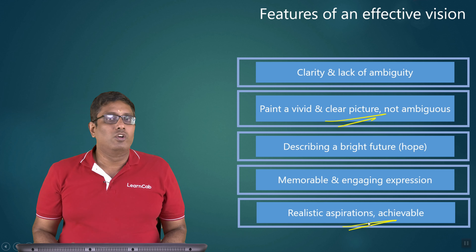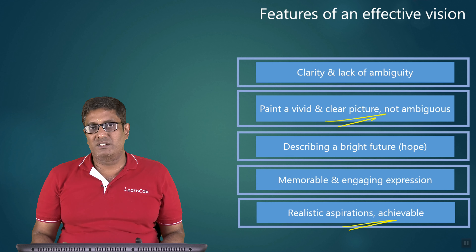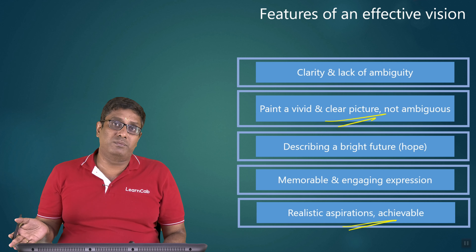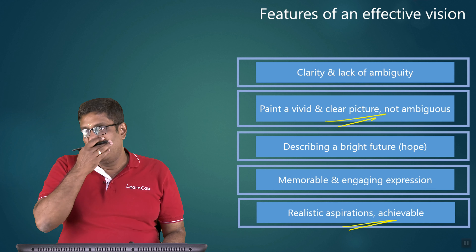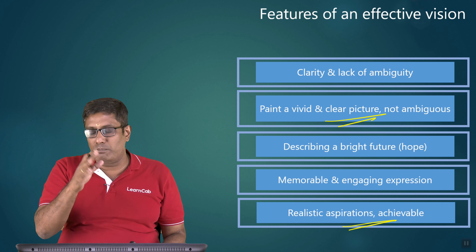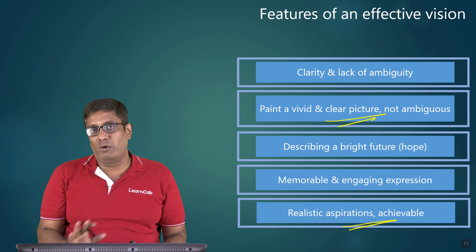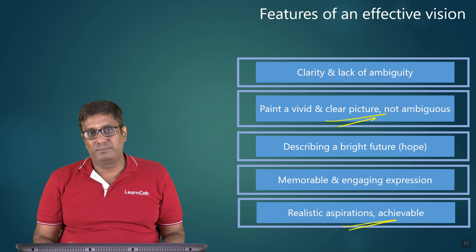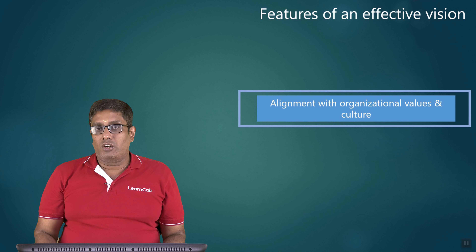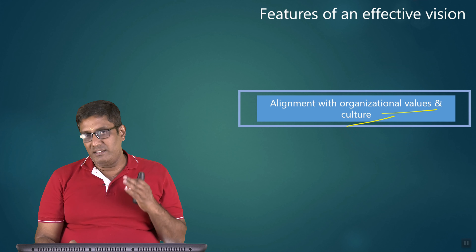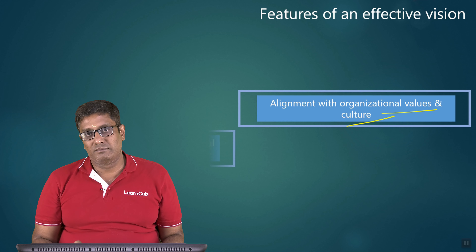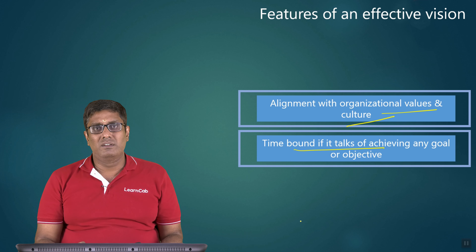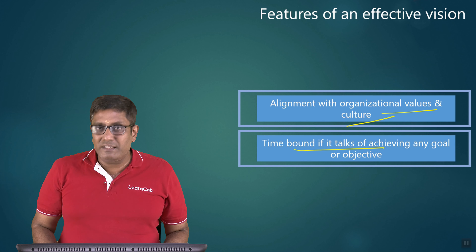Fifth: realistic aspiration and achievable — you should not give an unrealistic vision statement, like saying you will become the number one company in the world within five years when your company is at the bottom of thousands. Some realistic thinking should be there. Sixth: alignment with organizational values and culture — your vision statement should align with organization values and culture. Seventh: time-bound — if you are talking of achieving any goal, there should be a specific time given. Then only the vision statement is effective.